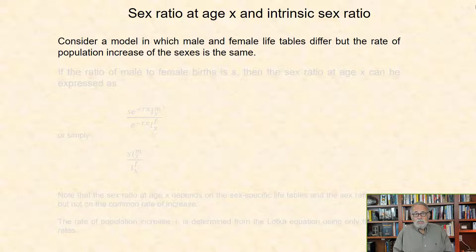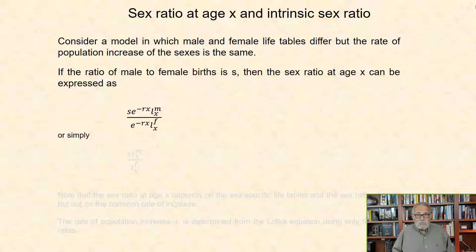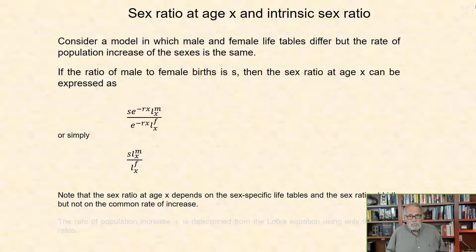Sex ratio at age X and intrinsic sex ratio. Consider a model in which female and male life tables differ, but the rate of population increase of the sexes is the same. If the ratio of male to female births is S, then the ratio of males age X to females age X is simply the product of S and the ratio of male to female survival at age X. Note that the sex ratio at age X depends on the sex-specific life tables and the sex ratio at birth, but not on the common rate of increase.